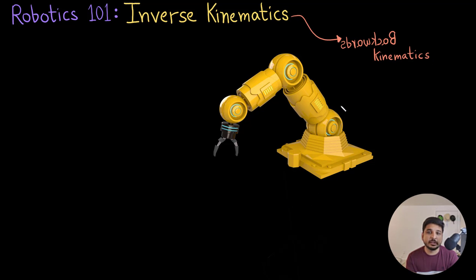It is also called backward kinematics since it is the opposite of forward kinematics. Let me explain what this is with the help of this fancy robot that I have right here. This is a 3R robot, it has got 3 revolute joints, each joint has a motor attached to it, so each joint can rotate independently.